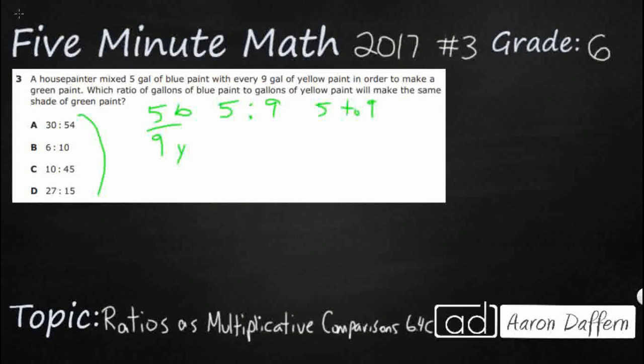So a simple way to do that would be just to set up all of our 5 to 9, and let's make that a 9 rather than a G, and let's just kind of look at it like this. 5 to 9, and let's look at A. So let's look at 30 to 54. It's going to be the same ratio. It says blue to yellow. That order is very important.